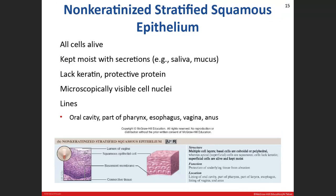Now let's talk about stratified squamous epithelium. There are two types: non-keratinized and keratinized. The keratinized type we'll cover more in the skin chapter. Keratin is a protective protein, and once a cell produces keratin it kills itself — a process called apoptosis. It's a suicide mission: the keratin increases cell strength but destroys all the cell organelles and the nucleus. Without a nucleus, the cell is dead.